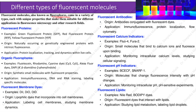Now let's discuss different types of fluorescent molecules. Fluorophores come in a variety of types, each with unique properties suitable for different applications in fluorescence microscopy. Fluorescent proteins — examples include green fluorescent protein (GFP), red fluorescent protein (RFP), and yellow fluorescent protein (YFP). These are naturally occurring or genetically engineered proteins with intrinsic fluorescence, used for protein localization, tracking, and dynamics within live cells.